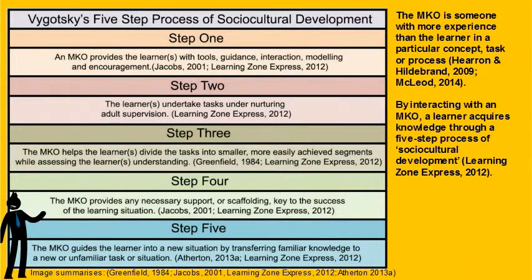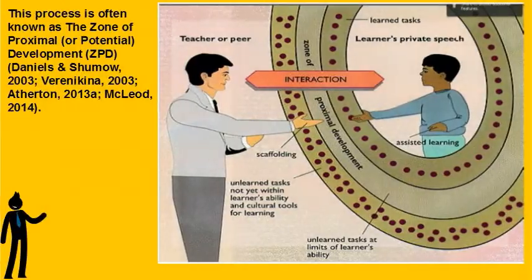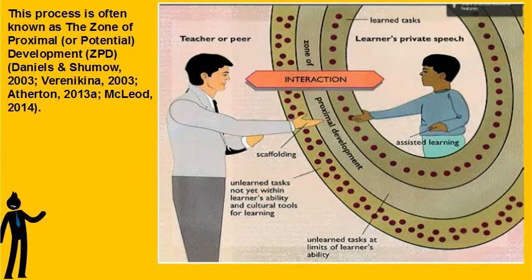The MKO is someone with more experience than the learner in a particular concept, task, or process. By interacting with an MKO, a learner acquires knowledge through a five-step process of socio-cultural development. This process is often known as the zone of proximal or potential development, or ZPD.